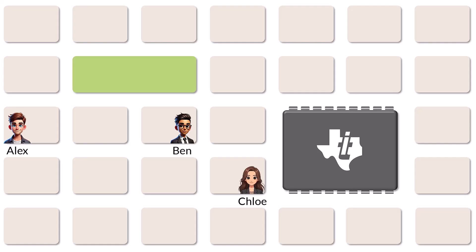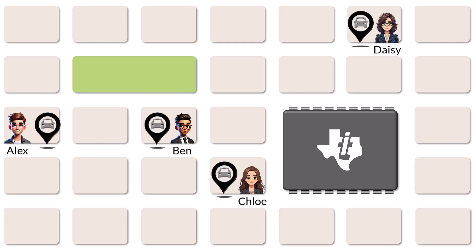Alex, Ben, Chloe and Daisy are all booking rideshare vehicles. To ensure the most time-efficient allocation, four nearby vehicles need to be strategically assigned. The red car is three minutes from Alex, seven minutes from Ben, eight from Chloe and twelve from Daisy.